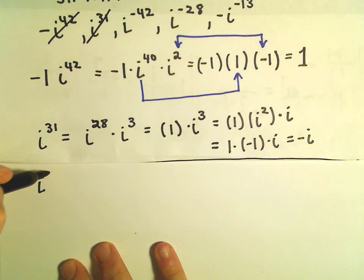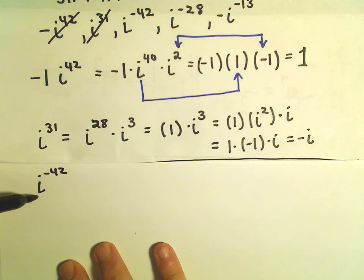So we have i to the negative 42. And again, to make negative exponents positive, we try to put those on the other side of the fraction. So I'm going to make this a fraction by simply dividing it by 1. You could also think that the numerator is being multiplied by 1.